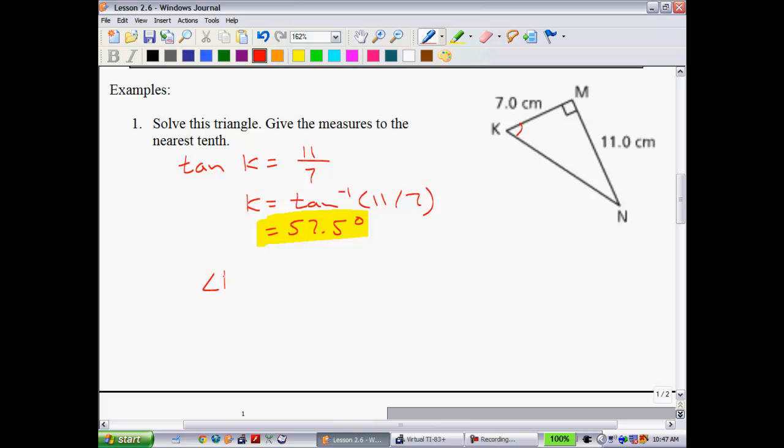And that tells me, get my calculator out here. So, tangent inverse of 11 over 7. Angle K is 57.5 degrees. Okay, to get angle N, it's not exactly rocket science, I would just take 180 degrees in any triangle, minus the 90 degree angle that we have, and then the angle that we just found, and you will see that you get 32.5 degrees.